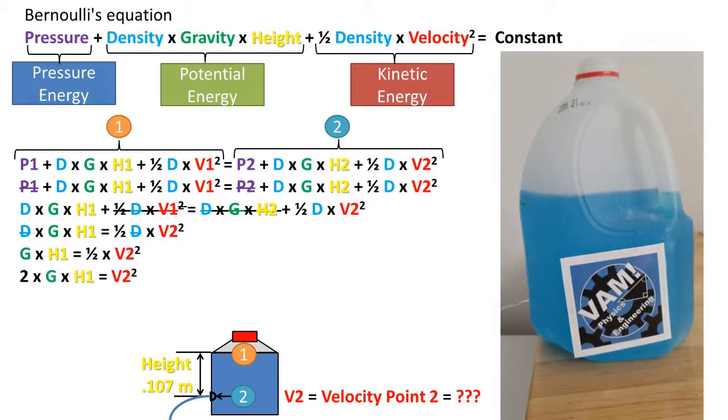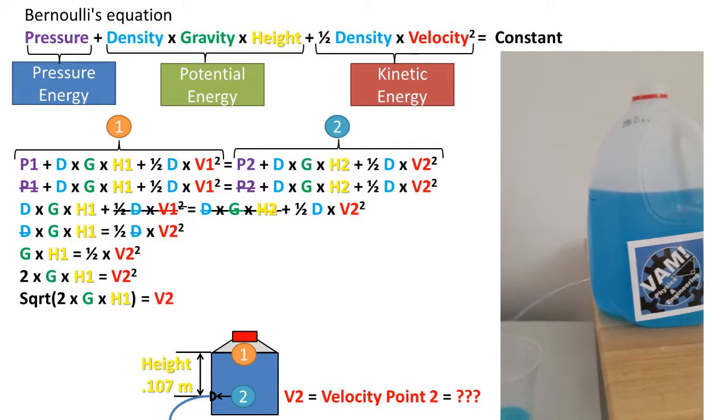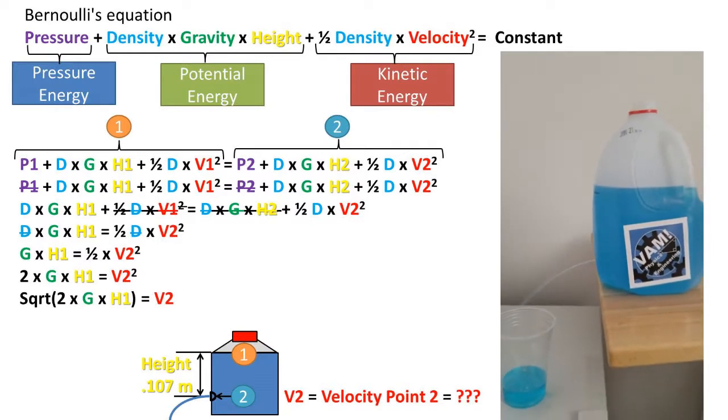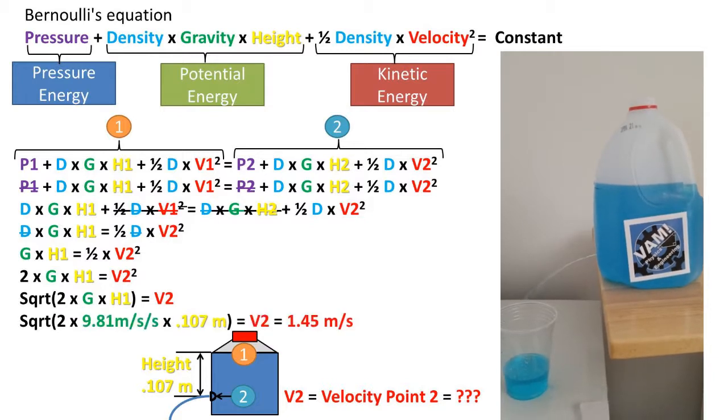Rearranging the formula using algebra, we get that the square root of 2 times gravity times the height of the waterline to the hole the water is going through, being equal to the velocity at point 2, or the velocity of the water coming out of the hole. Plugging in gravity of 9.81 meters per second per second and the height from the waterline to the hole of 0.107 meters into the equation, we get a velocity of 1.45 meters per second.